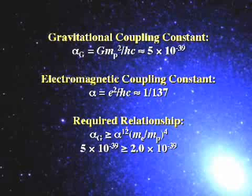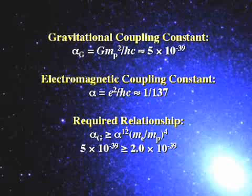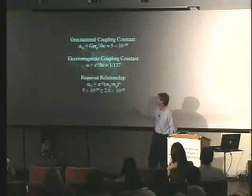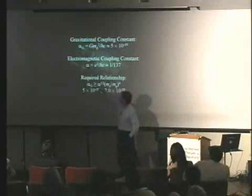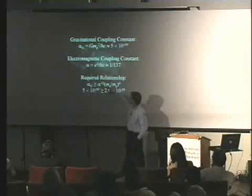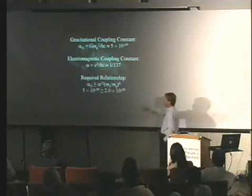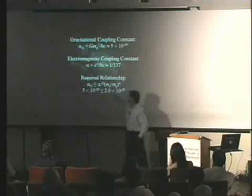In order to have life as we know it, we need stars that burn stably and consistently over billions of years. Brandon Carter did calculations to determine what that requires. He showed that in order for stars like our sun to exist, the gravitational coupling constant must be greater than or equal to the electromagnetic coupling constant to the 12th power, times the mass of the electron divided by the mass of the proton to the 4th power. When you put the numbers in, you get a number that's extremely small but slightly bigger than another extremely small number.